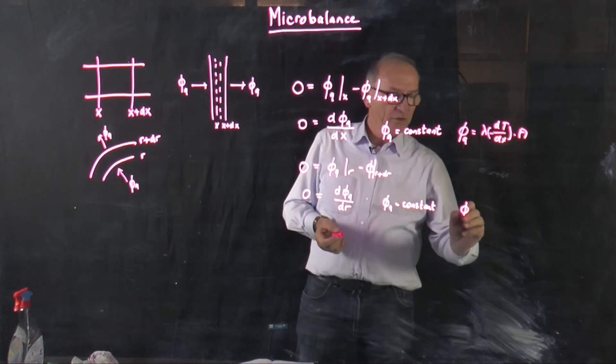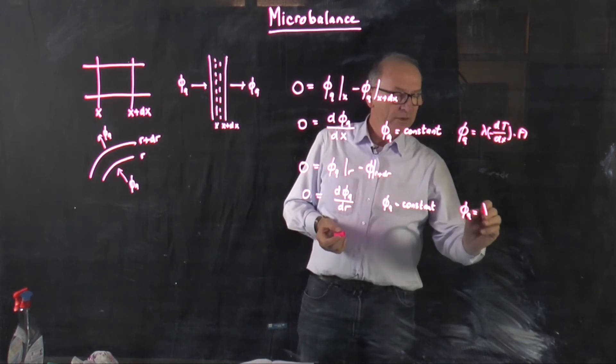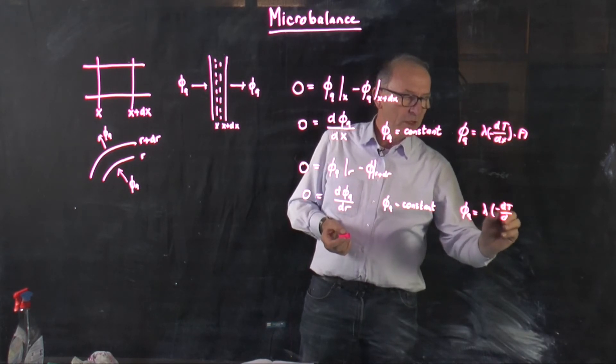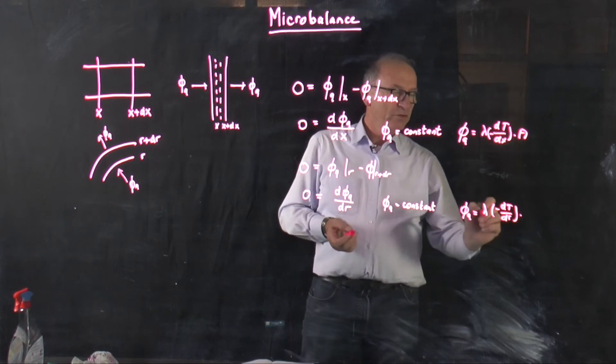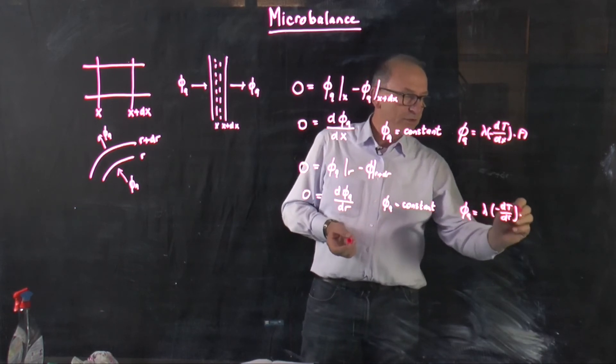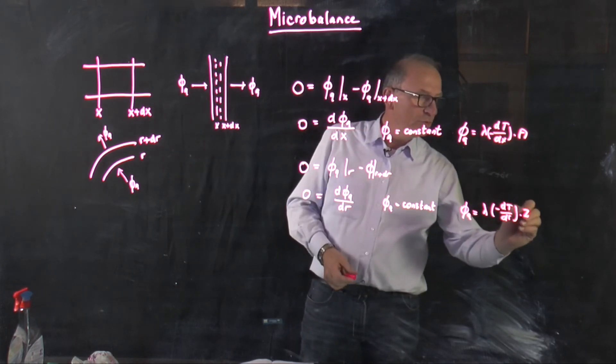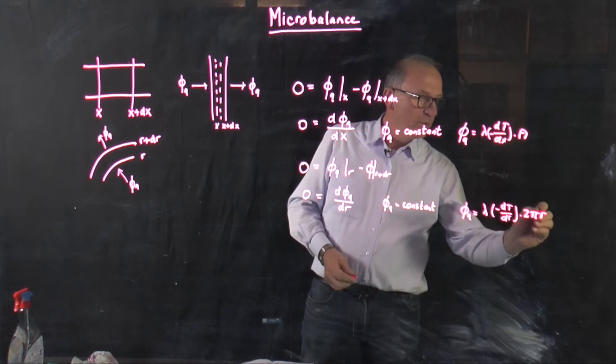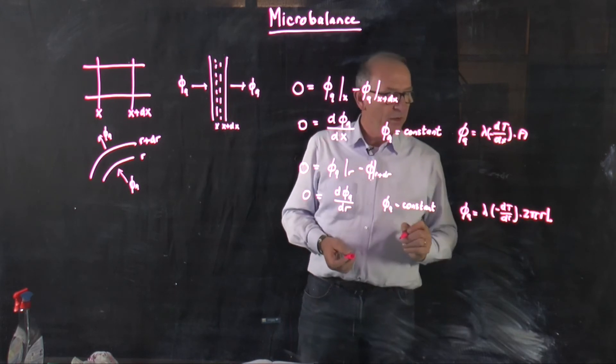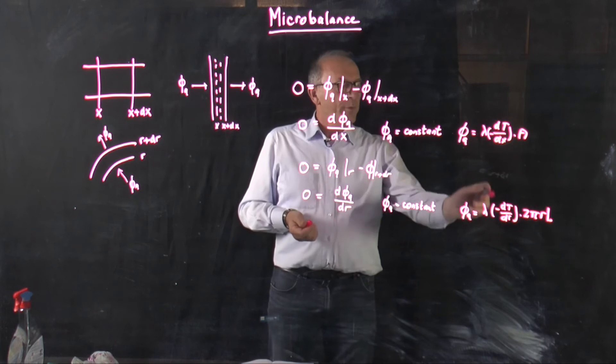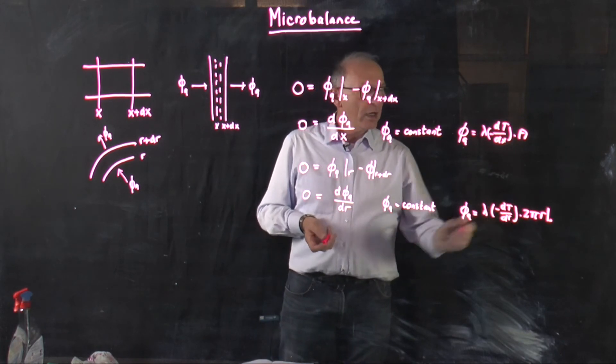And in this case you get phi q is in cylindrical coordinates dr multiplied also by the surface area. But in this case the surface area is also dependent on the radius. So we get 2 pi r multiplied by the length of the cylinder. So you see if you look at both equations you see that here r dependence comes in.